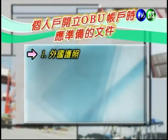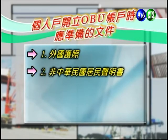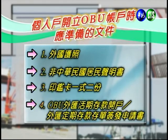個人戶開立OBU帳戶應準備的文件：第一，外國護照；第二，非中華民國居民聲明書；第三，印鑑卡一式兩份；第四，OBU外匯活期存款開戶或外匯定期存單簽發申請書。當錢存在OBU帳戶，政府基本上無法科任何稅金，所以有些外國人把錢開在OBU帳戶而不開一般的境內帳戶（DBU帳戶）。